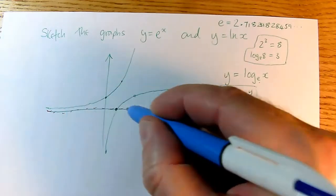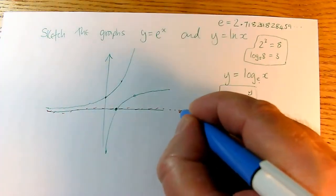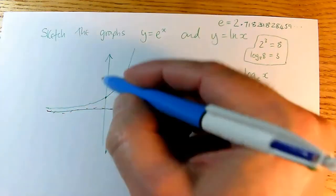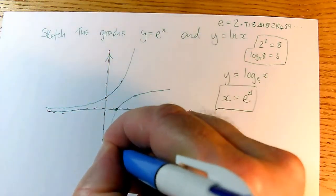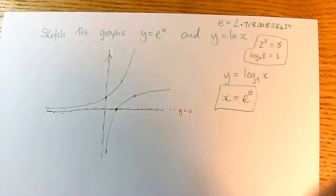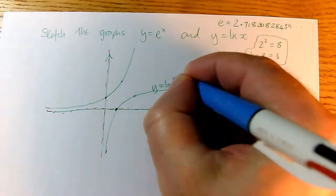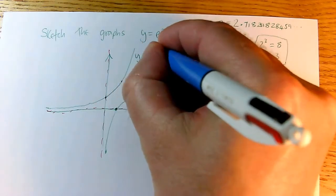And because the x-axis is an asymptote, this was y equals 0 was an asymptote of the graph y equals e to the x, the y-axis is going to be an asymptote of this graph. This one is y equals log to base e of x. This one was y equals e to the power of x.